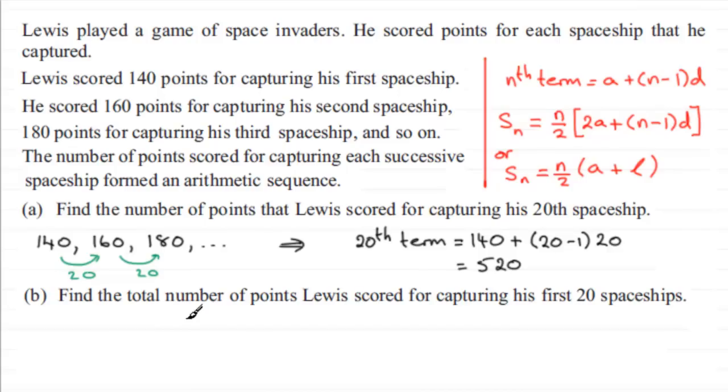When it comes to working out the total number of points over those first 20 games, if we take this formula n over 2, that's 20 over 2, multiplied by the first term which is 140 plus the last term in the sequence which is the 20th term, 520. So 140 plus 520 is 660, times it by effectively 10, and you get 6600 points.